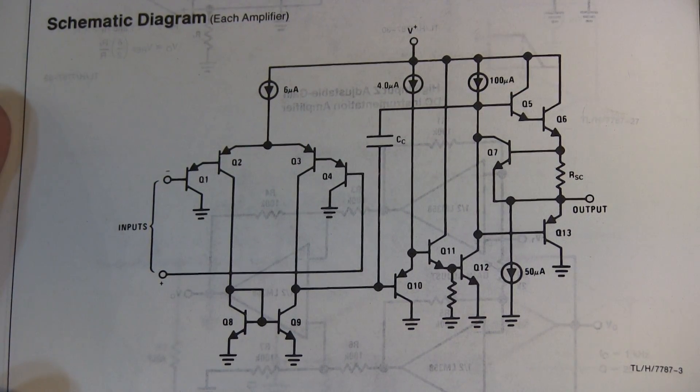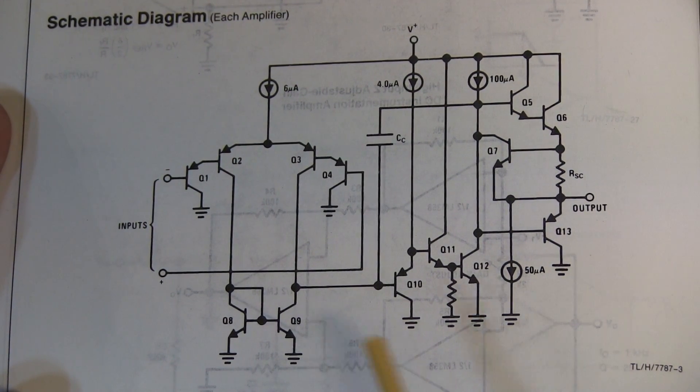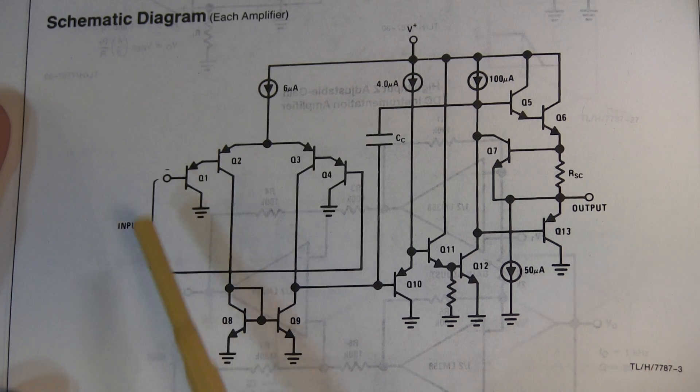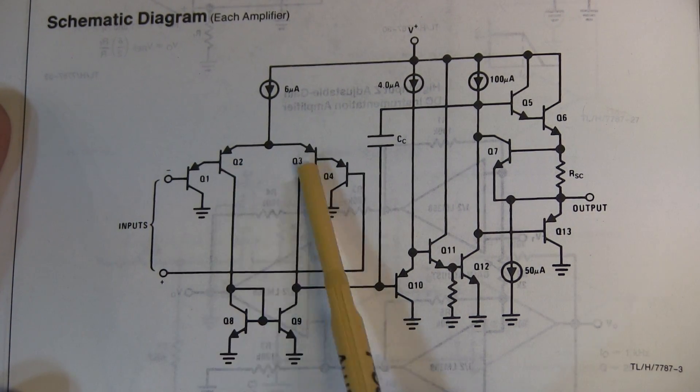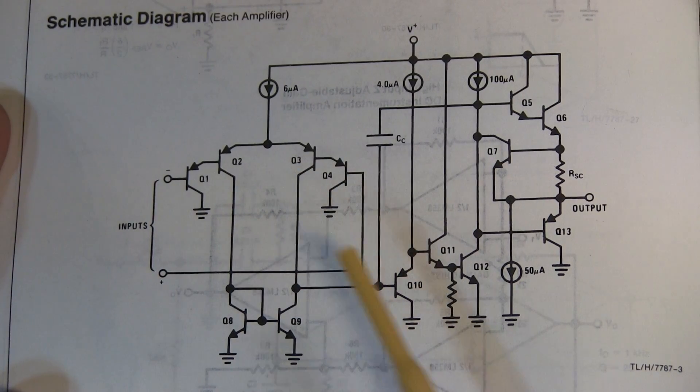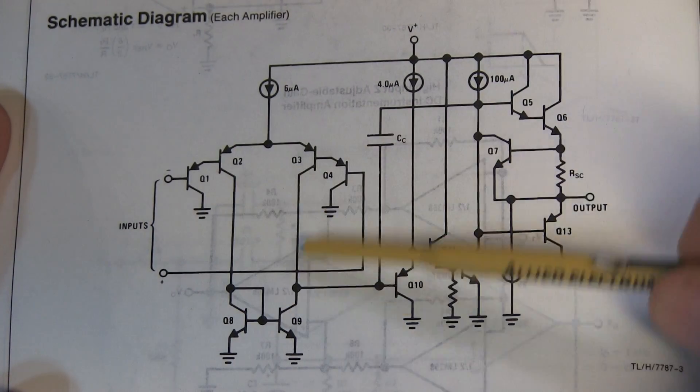So here's the simplified schematic for one stage of the LM358 op-amp. And we'll just run through it really quick so you understand how it works. The inputs are here, going through a pair of emitter followers into a PNP emitter coupled pair.